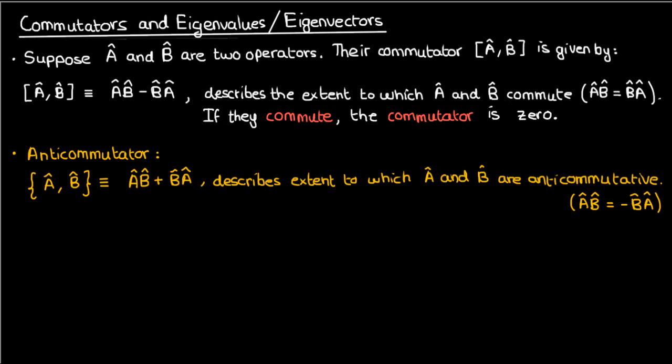The anti-commutator isn't used as frequently as the commutator but it's still worth defining because there is one notable place it'll show up in the next video. Now that I've defined commutators it's time to look briefly at some of their properties. I'm not going to be proving these properties because this isn't a linear algebra series, and these properties are also very easy to prove — I encourage you to do it yourself. For now I'll just be putting them up here for reference.